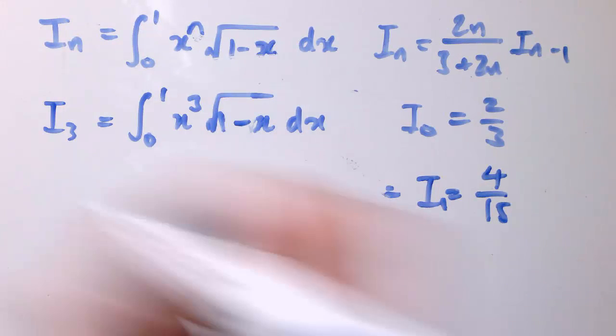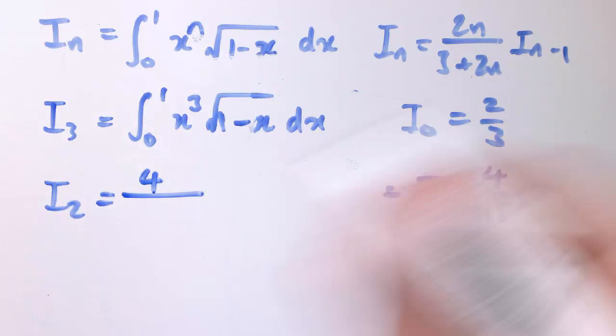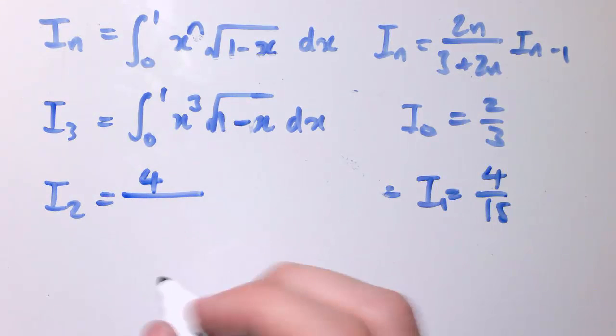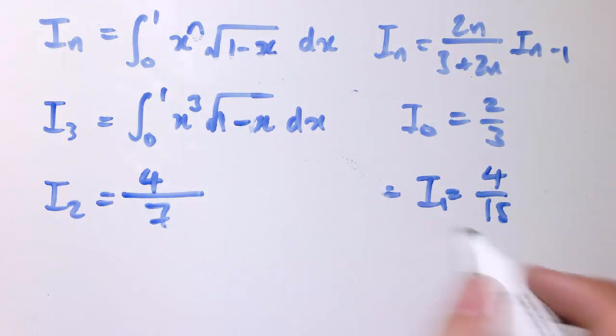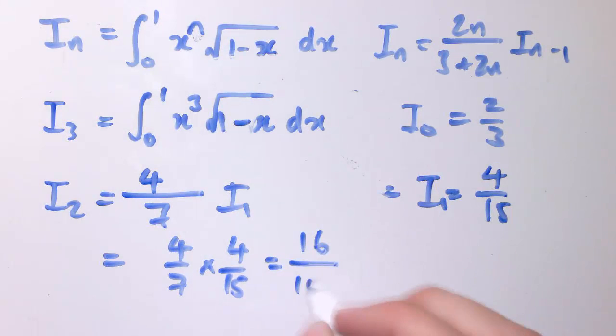To get i2, I put 2 in here. So 2 times 2 is 4. 3 plus 2 times 2, that's 3 plus 4, that's 7. So 4 sevenths times i1, which is 4 sevenths times 4 fifteenths, which is 16 divided by 105.